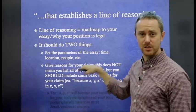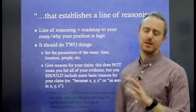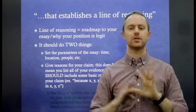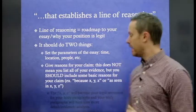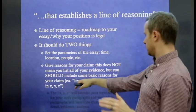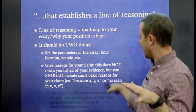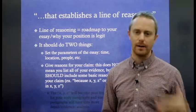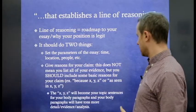It should be two things. One, it sets the parameters of the essay within time, location, who's involved, etc. But it also gives basic reasons for your claim. Now this doesn't mean you should list all of your evidence. Remember, that's what your body paragraphs are for. But it should include some basic reasons for your claim. Because of X, Y, and Z, or as seen in X, Y, and Z, this is more or less why I'm taking this position.